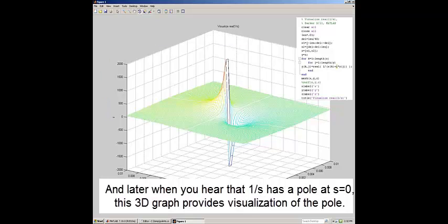Later, when you hear that 1 over S has a pole at S equals zero, this three-dimensional graph provides visualization of that pole.